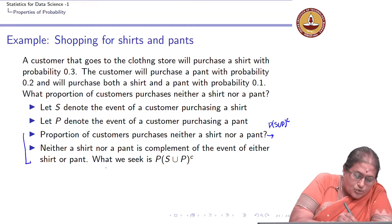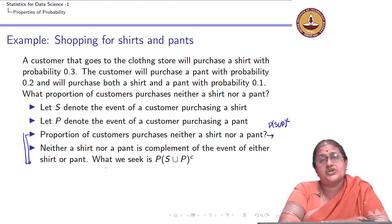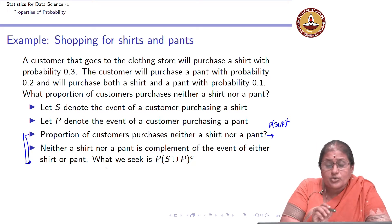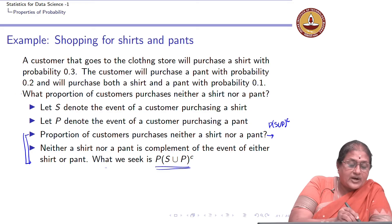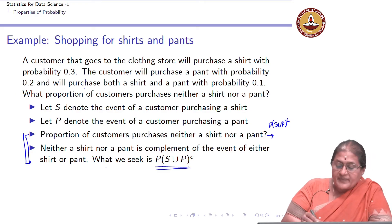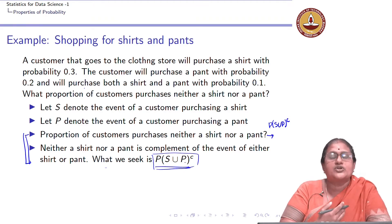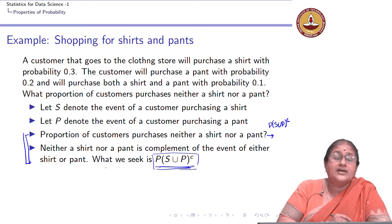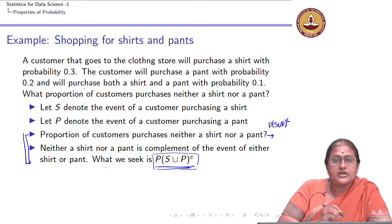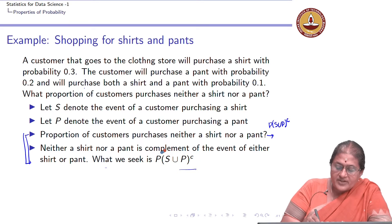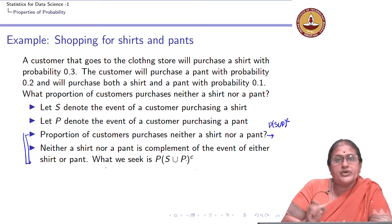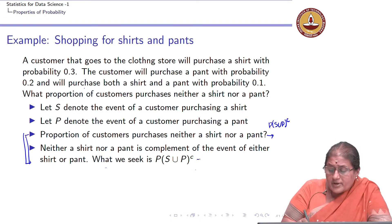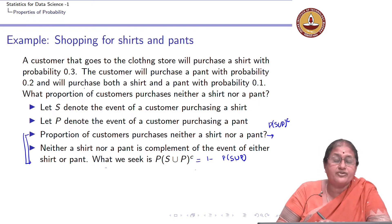These are crucial observations. Nobody is going to directly ask us to find the probability of S union P complement. We need to understand that given the problem, this is what is being sought. Once we pose the problem in this framework, we apply the laws of probability to come up with the answer. We seek probability of S union P complement, and we know the probability of a complement is 1 minus the probability of S union P.